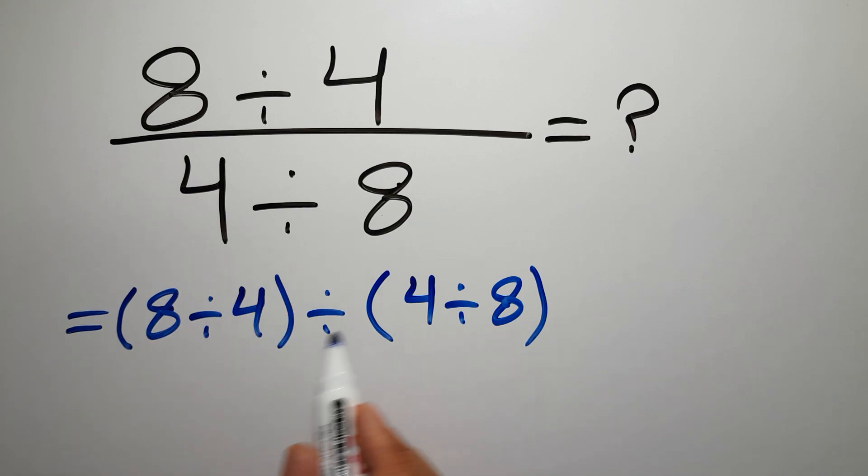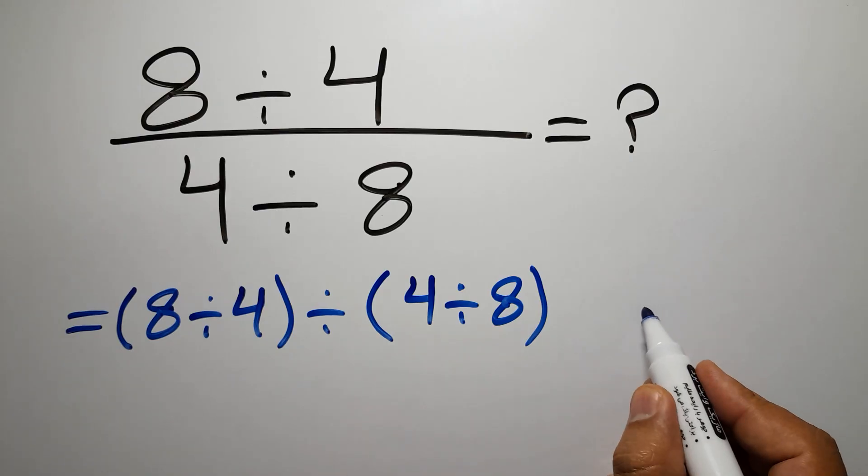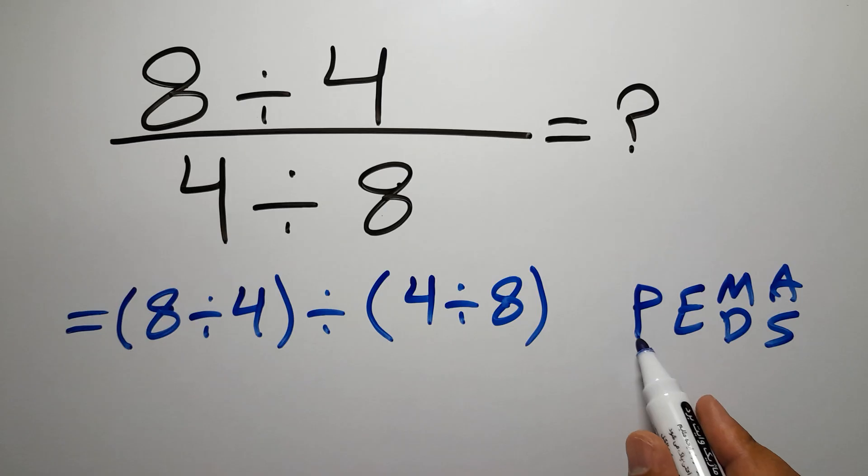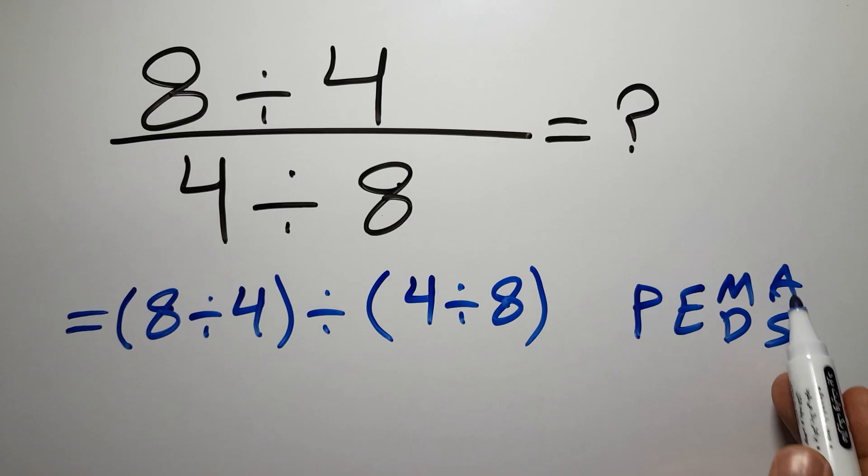Now we have two parentheses and one division. According to the order of operations, which is PEMDAS, P stands for parentheses, E stands for exponents, M and D stands for multiplication and division, and A and S stands for addition and subtraction.